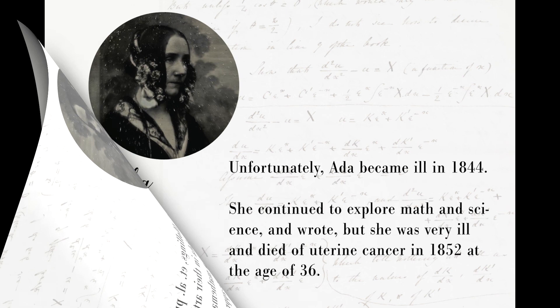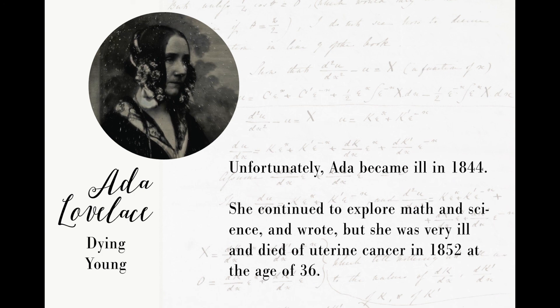After Ada worked with Babbage providing documentation for his analytical engine, she became ill in 1844. Even though she continued to explore math and science and she wrote, she was very ill and died of uterine cancer in 1852 at the age of 36. She did come up with other ideas, but unfortunately she couldn't see anything to fruition because she died.